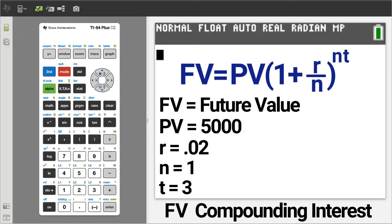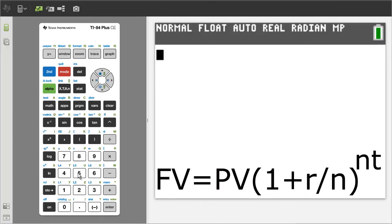Thus, PV equals 5000, R equals 2%, which is .02, N is 1 for one compounding period per year, and T is 3 for 3 years. So enter 5000 times open parenthesis.